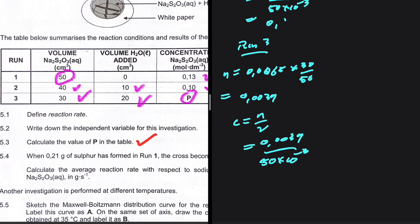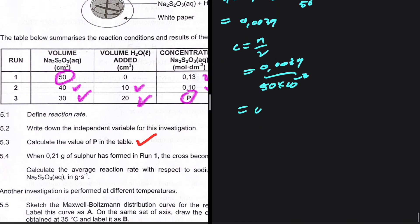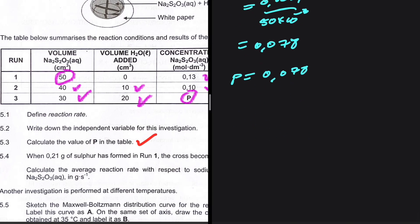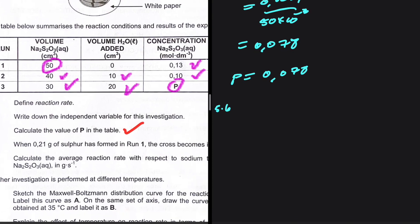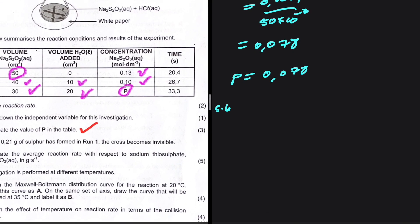Putting that in the calculator gives 0.078. So p is equal to 0.078 — that is the concentration of sodium thiosulfate in run three. That's 5.3. Let's go ahead and do 5.4.